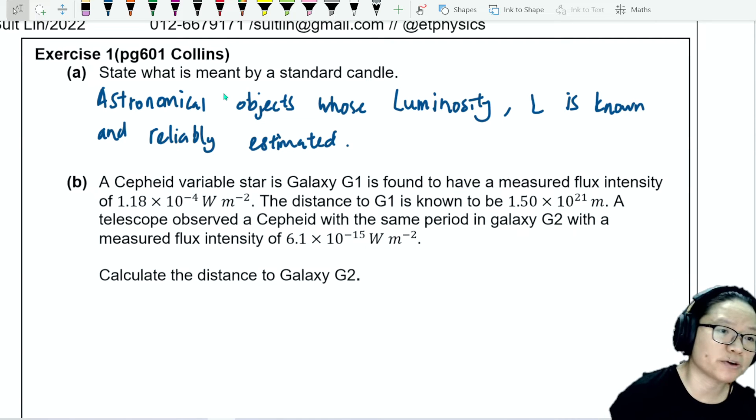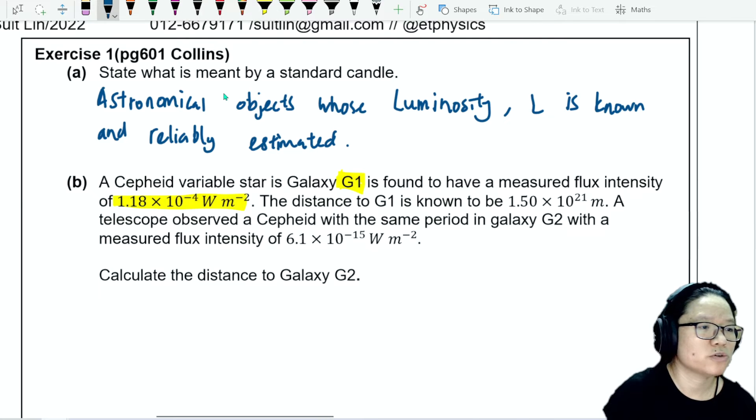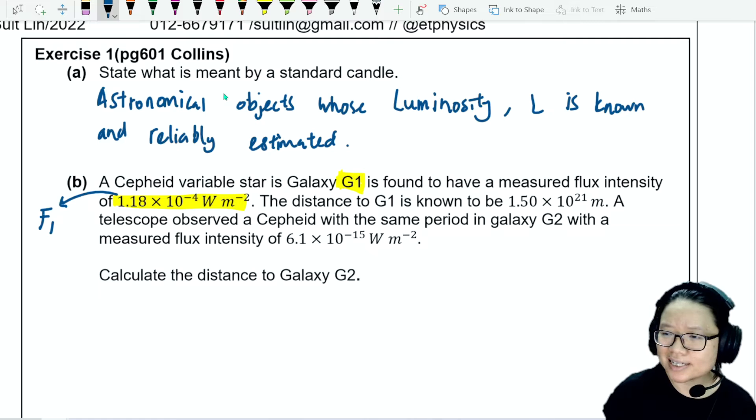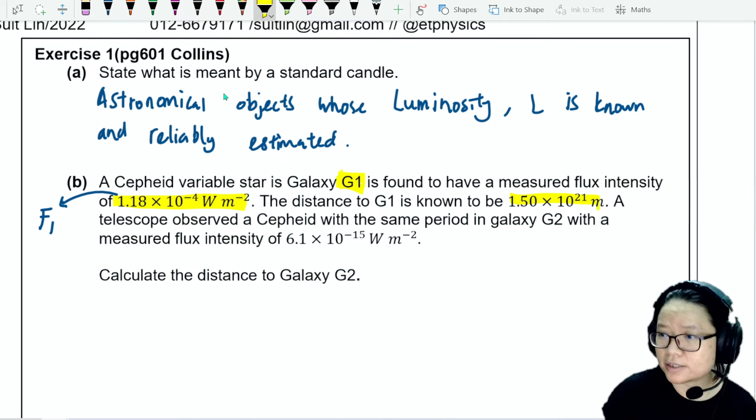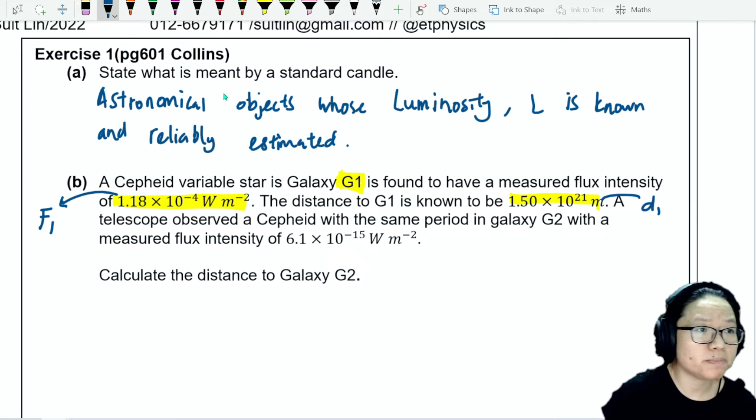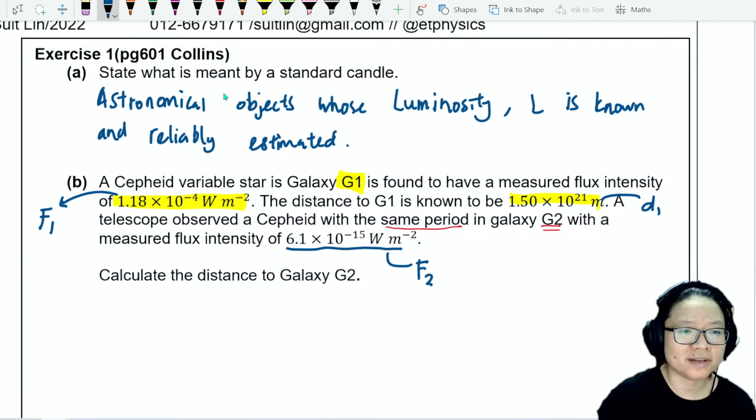In part B, we have a Cepheid variable star in galaxy G1, just unknown galaxy. It's found to have a measured flux intensity of 1.18 times 10 to the power of negative 4, so I'll call this F1. The distance to G1 is known to be 1.5 times 10 to the power of 21 meters. So I'm just going to call this D1, distance 1. A telescope observed a Cepheid variable star with the same period in galaxy G2, with a measured flux intensity of 6.1 times 10 to the power of negative 15 watts per meter squared. So this is F2.